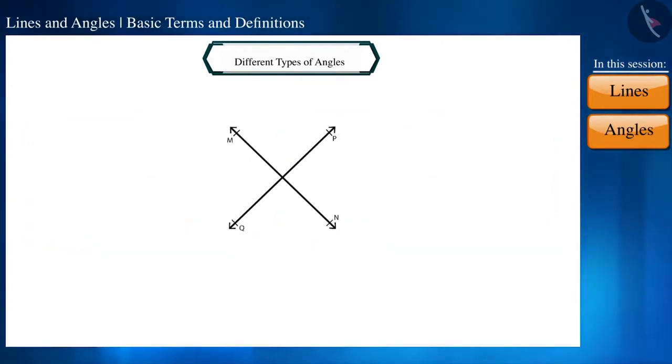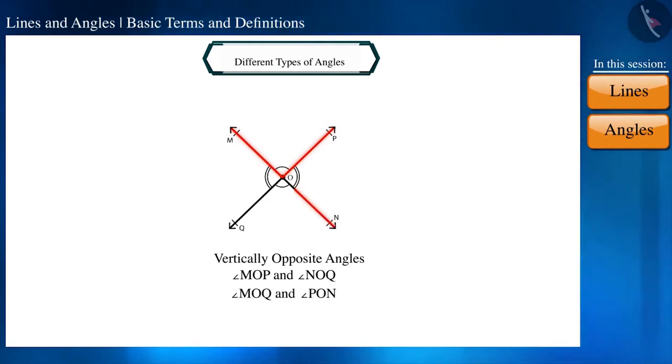If two lines intersect each other then the vertically opposite angles are formed. Like here, the line MN is intersecting the line PQ at the point O. Here, we get two pairs of vertically opposite angles. The first pair is angle MOP and angle NOQ. Can you tell the name of the second pair? Yes, angle MOQ and angle PON is the pair of the vertically opposite angles.